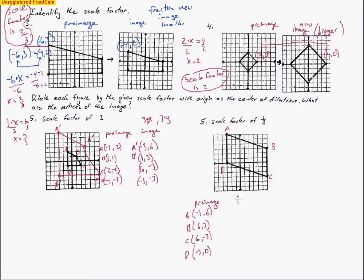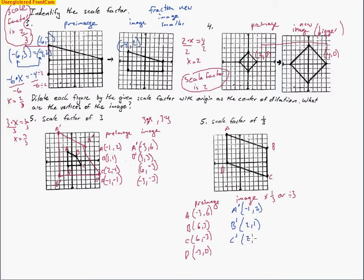Now the image is going to be multiplied by 1 third, which is the same as dividing by 3. A prime: divide negative 3 and 6 each by 3, giving negative 1, 2. B prime: 6 divided by 3 is 2, and 3 divided by 3 is 1 — so 2, 1. C prime: 6 divided by 3 is 2, and negative 3 divided by 3 is negative 1 — so 2, negative 1. D prime: negative 3 divided by 3 is negative 1, and 0 divided by 3 is 0 — so negative 1, 0.